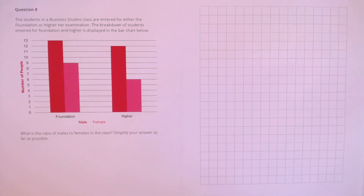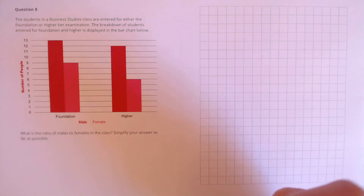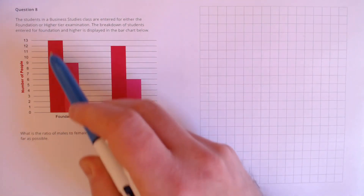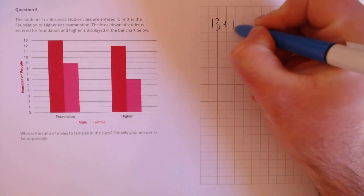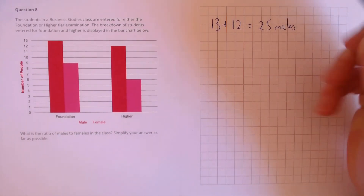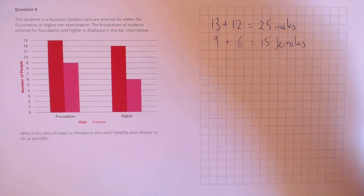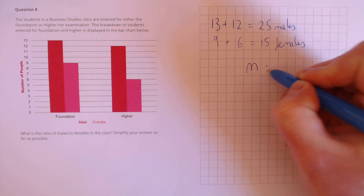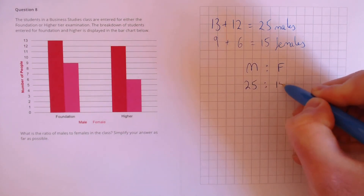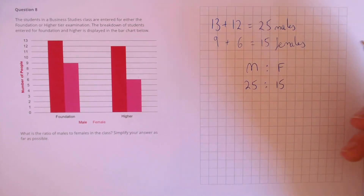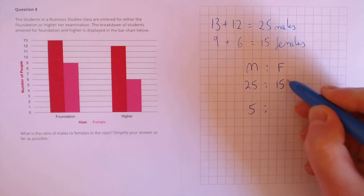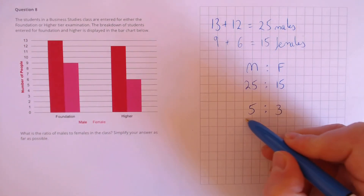Question 8. The students in a business studies class are entered for either the foundation or higher tier examination, as displayed in the bar chart below. What is the ratio of males to females in the class? Simplify your answer as far as possible. We need the total number of males: 13 plus 12 equals 25 males. For females: 9 plus 6 equals 15. Forming the ratio, males to females is 25 to 15. Dividing both parts by 5 gives 5 to 3 as our final answer.